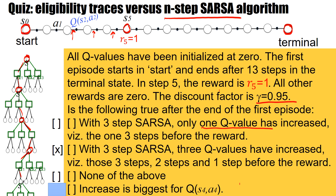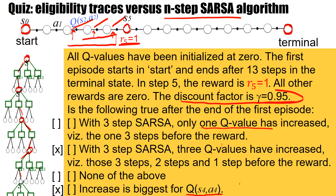This is the case where we have one single reward in step 5. Now one additional bonus question: the claim is that the increase is biggest for Q(S4, A4). We know three Q-values are updated: Q(S2,A2), Q(S3,A3), and Q(S4,A4). The claim is that Q(S4,A4) will have the biggest increase. The answer is yes. With discount factor gamma=0.95, the biggest increase is closest to the reward: 0.95, then about 0.9, and 0.85 for three steps before.